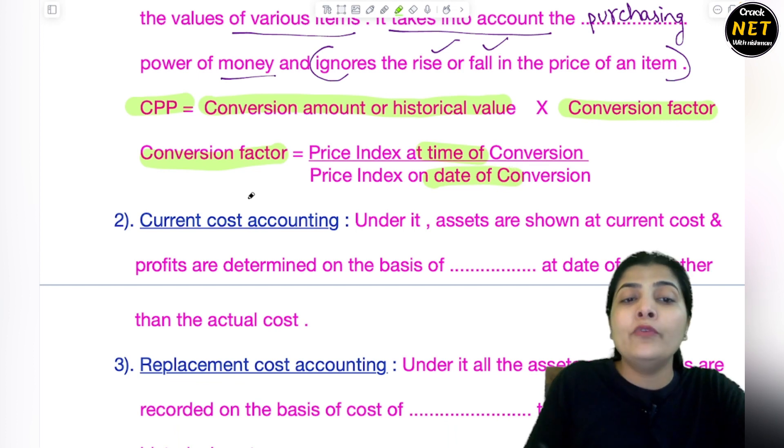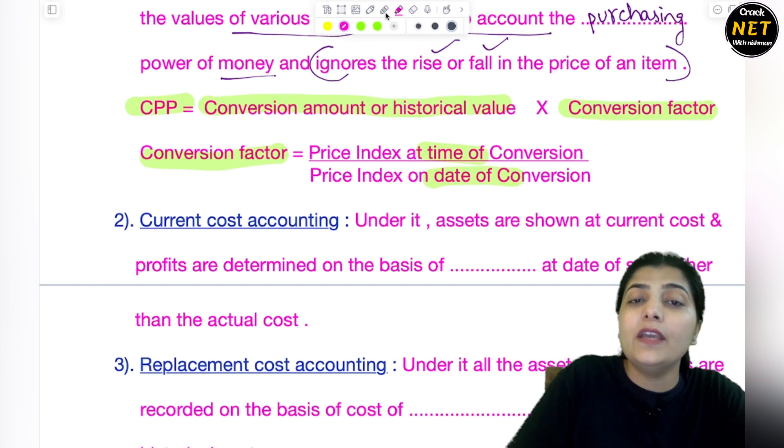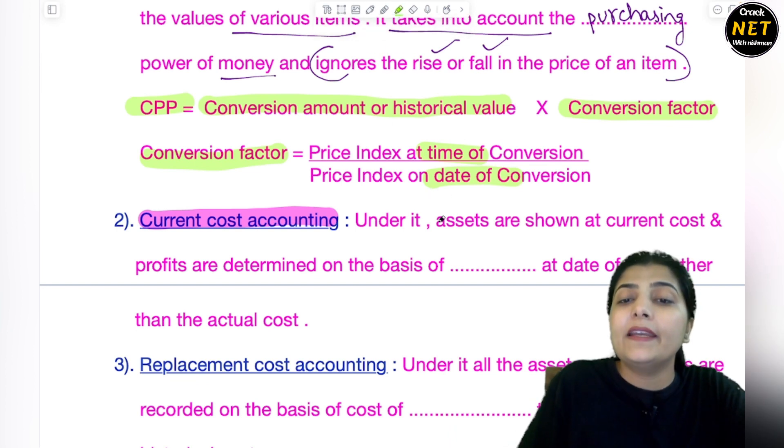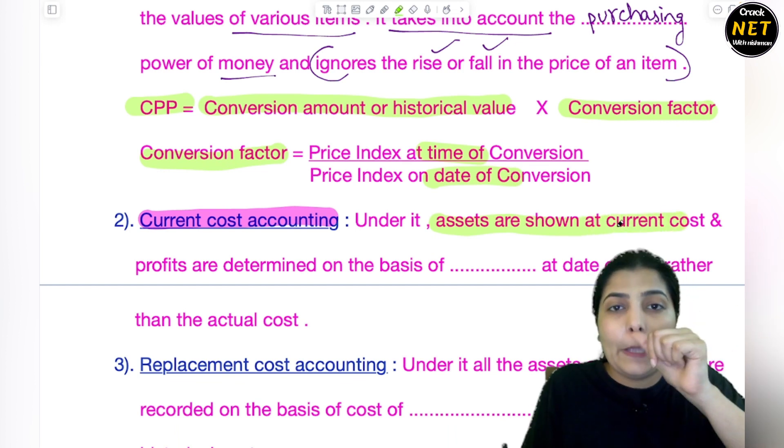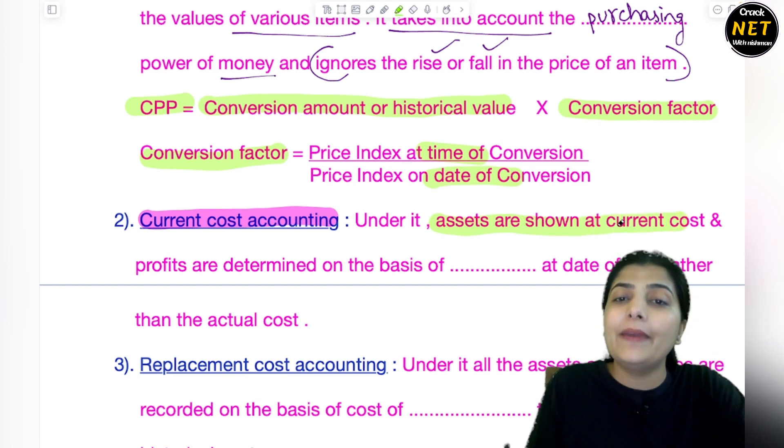Now moving to the next item. The next method is very important again, students. Listen carefully. What it says is Current Cost Accounting. Current Cost Accounting - which method does it tell us? Here it is said that assets are shown at their current value. Whatever their current value is, assets are shown there.